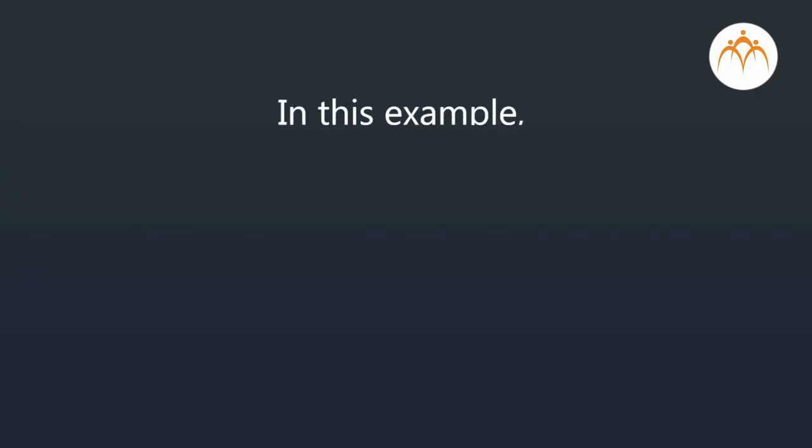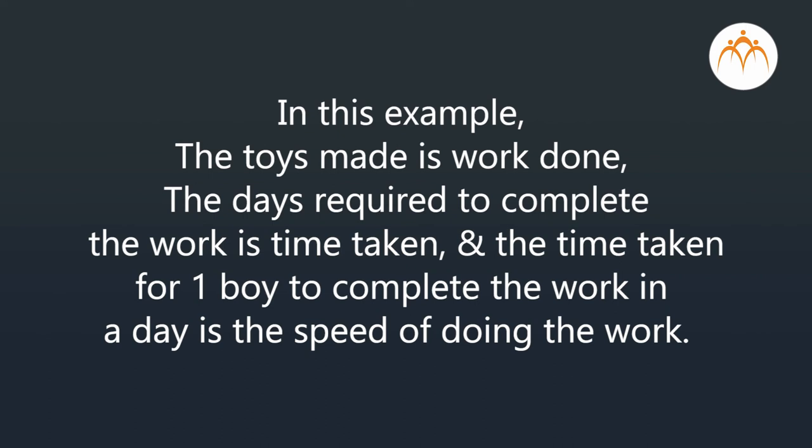Did I solve it correctly, Dada? That is absolutely correct, Sai. You have considered all these steps while solving the examples by properly using inverse and direct variation. So, now you have understood it correctly. Yes Dada, I have understood very nicely. And you know Sai, in this example, the toys made is the work done. The days required to complete the work is the time taken. And the time taken for one boy to complete the work in a day is the speed of doing the work. Try and understand it this way, and you will not find examples of work, speed and time difficult.